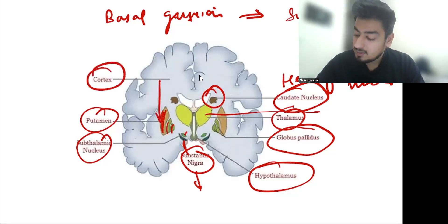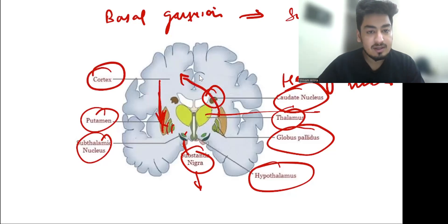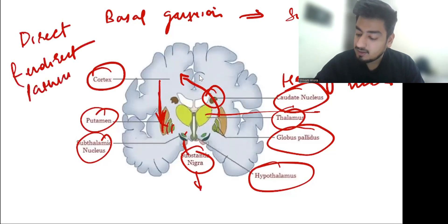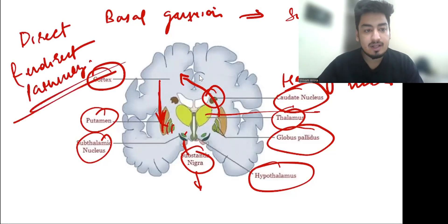The cortex sends signals through direct and indirect pathways within the basal ganglia. We won't discuss these pathways in detail here.